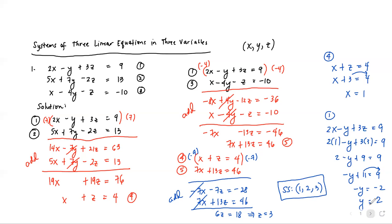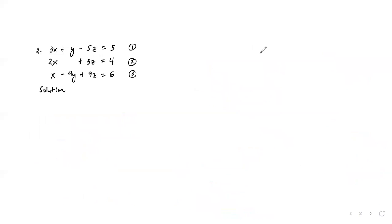For our second example, the system is: equation 1 is 3x plus y minus 5z equals 5; equation 2 is 2x plus 3z equals 4 (only two variables); and equation 3 is x minus 4y plus 9z equals 6. Since equation 2 already has only two variables, we use equations 1 and 3 to eliminate y, obtaining an equation in x and z, which we then pair with equation 2.